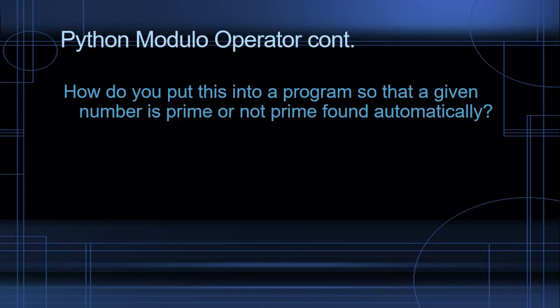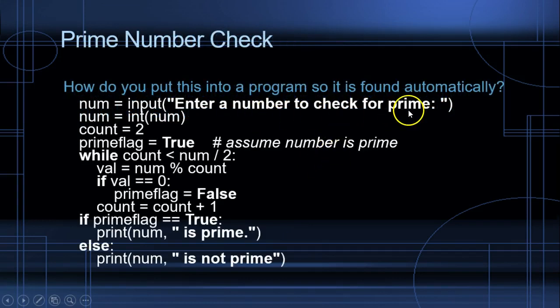How do you put this into a program so that a given number is prime or not prime is found automatically? Well, we have a little program here. So, we want to type in enter a number to check for prime. Since this is automatically made into a string, we need to convert it to an integer. We're going to start our count, which is what we're going to use for the dividing, at 2. We're going to set the prime flag equal to true. So, we're going to assume the number is prime.